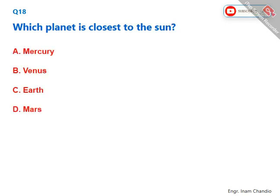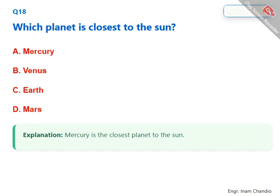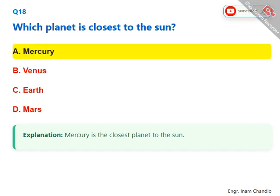Which planet is closest to the sun? Mercury is the closest planet to the sun. The correct answer is A. Mercury.